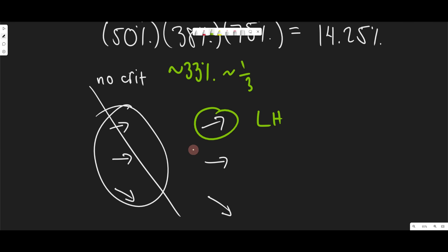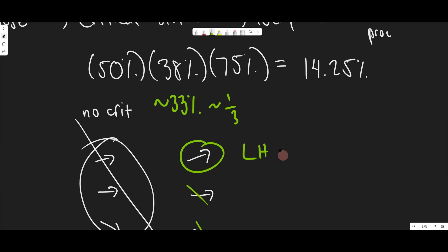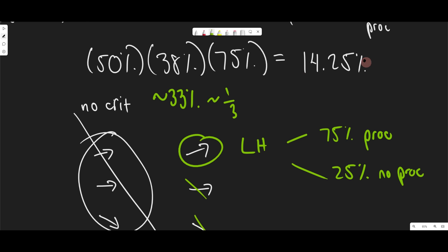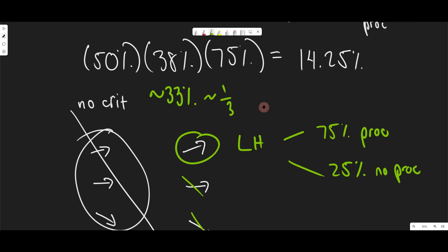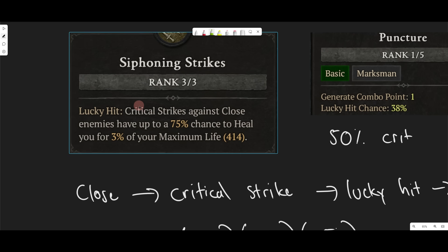And then 75% of what's left is going to proc, meaning that at this point, our one Lucky Hit has a 75% chance of proccing and 25% chance of not proccing. So a little bit less than one sixth, which is 14%. One sixth is 16% approximately. So essentially, every time you use puncture twice, if you have a 50% crit chance, you're getting approximately one Lucky Hit proc of siphoning strikes. So every time you use puncture twice approximately, you're going to get 3% life back. So pretty bad.